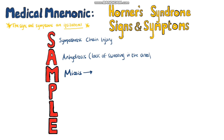M stands for meiosis, meaning that the pupil is constricted. This makes sense because there is a disruption of the sympathetic innervation, and sympathetic signalling usually leads to pupil dilation, which is called mydriasis. I remember this by thinking mydriasis has a D in it, reminding me of dilation.